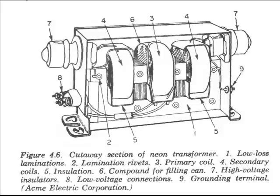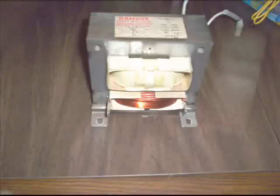You can safely short out these transformers and it won't cause an overload. Another good type of transformer to use is a furnace ignition transformer. These are also current limited and work well for high voltage experiments. My Tesla coil uses a 6000 volt 20 milliamp furnace ignition transformer. Some people have also used microwave oven transformers to power a Tesla coil.